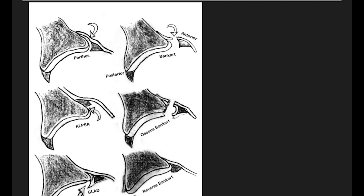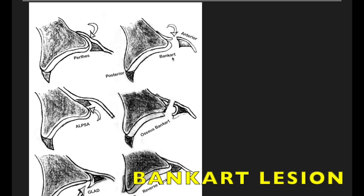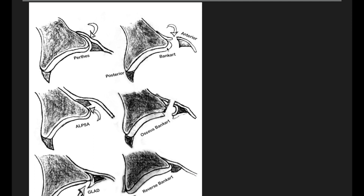Now we'll discuss about the Bankart lesion. What exactly happens in a Bankart lesion is there is detachment of the anterior inferior labrum along with a tear in the periosteum. So together, the anterior inferior avulsion of the glenoid labrum and periosteum tear form the Bankart lesion, and the posterior labrum appears normal.